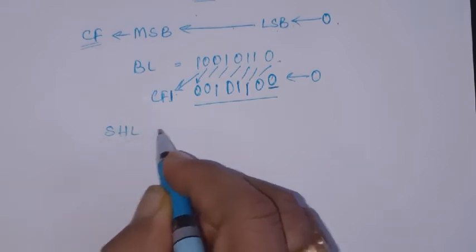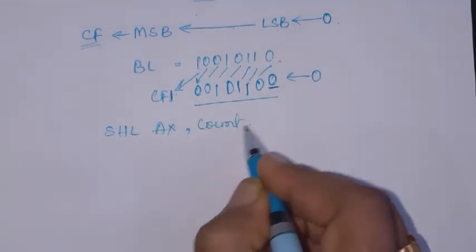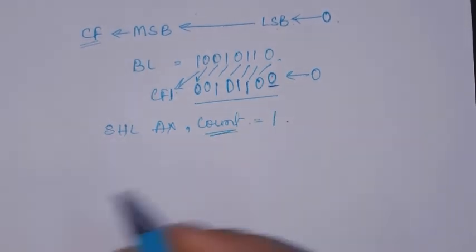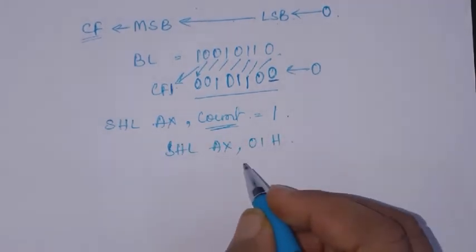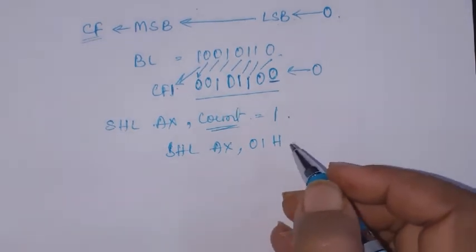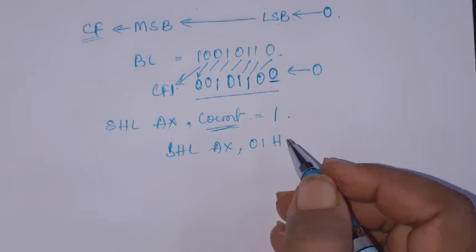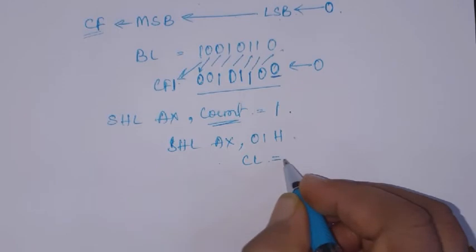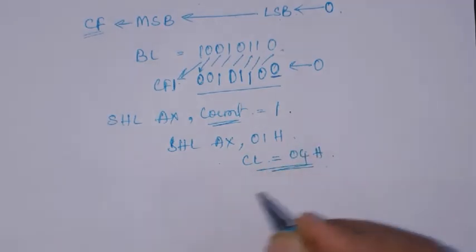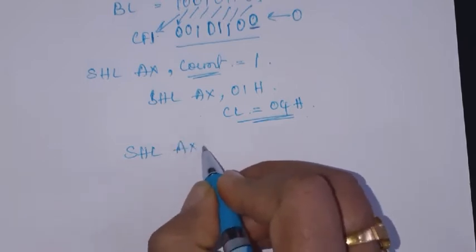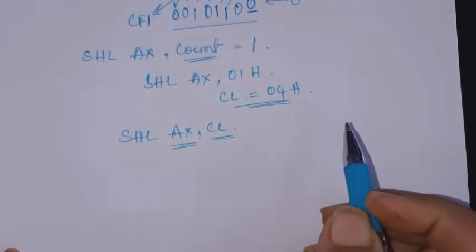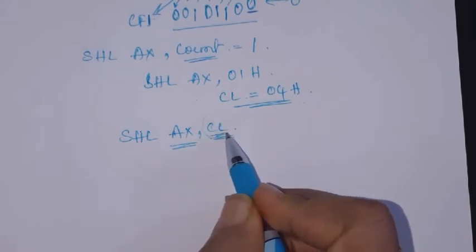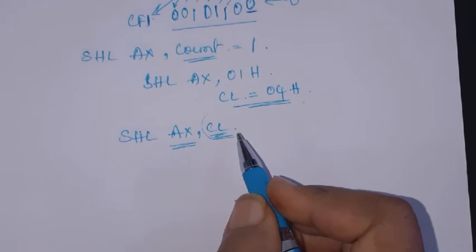It can also be a 16-bit register, like AX with a count. If count is equal to 1, you can specify it as an immediate in the instruction — for example, SHL AX, 01H. If the count is more than 1, such as a 2-bit or 4-bit shift, then you should load the count into the CL register.